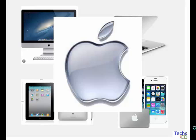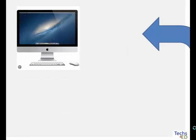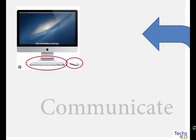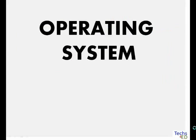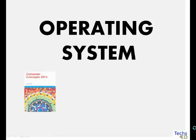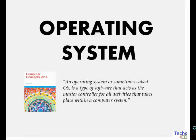The Mac computer is built with hardware, with keyboard and with mouse, but you as a user have to be able to communicate to it, and this is where the operating system comes in. According to this book, an operating system, or sometimes called OS, is a type of software that acts as master controller for all activities that take place within a computer system.